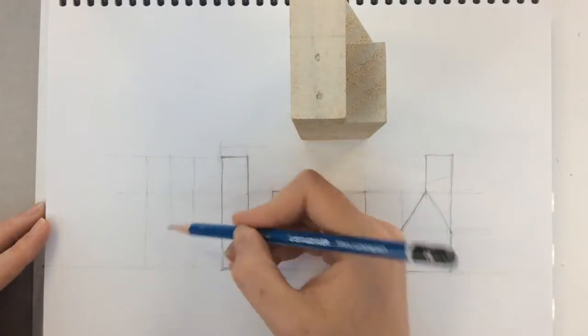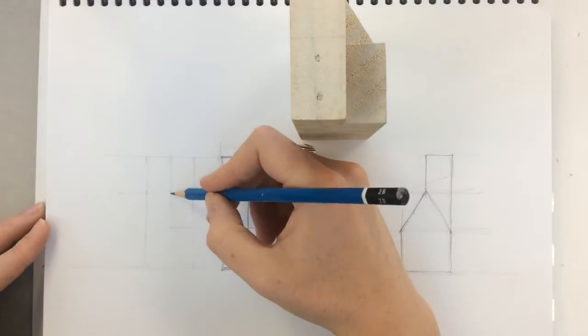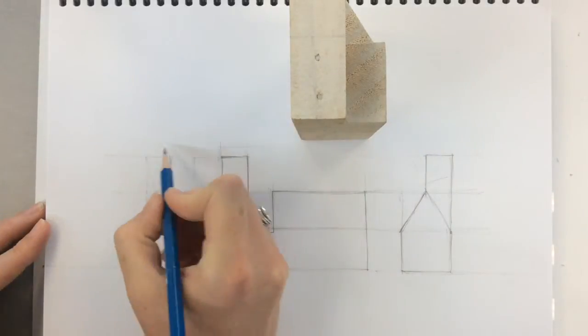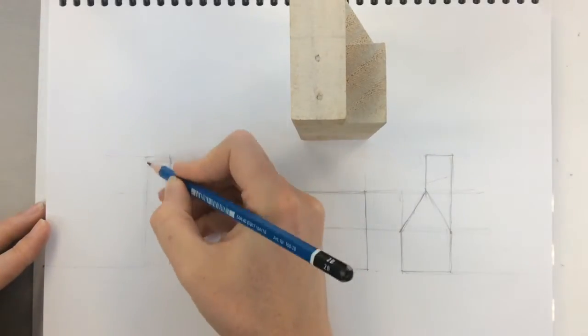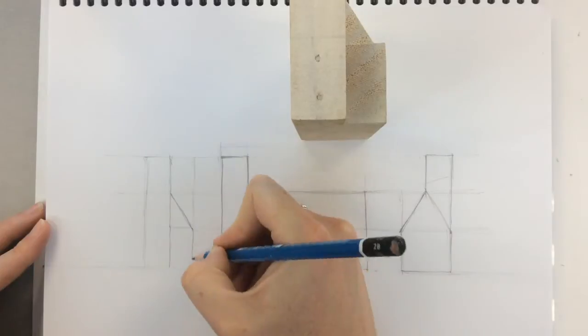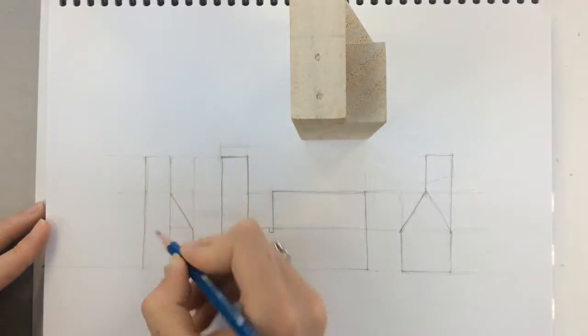And I've got my light boxes. Make sure I'm getting the little details in there, those edges that we can see and darkening them in.